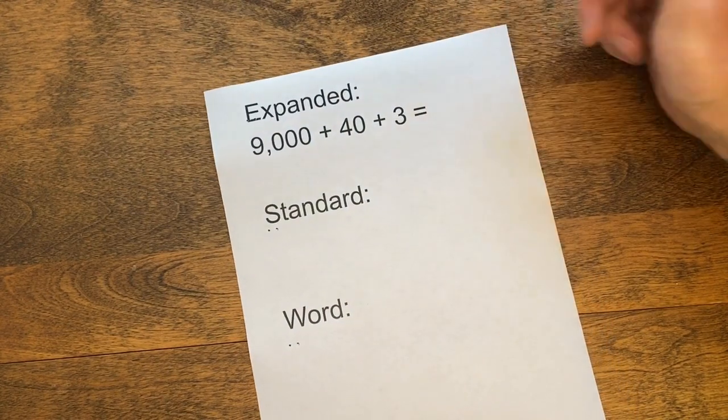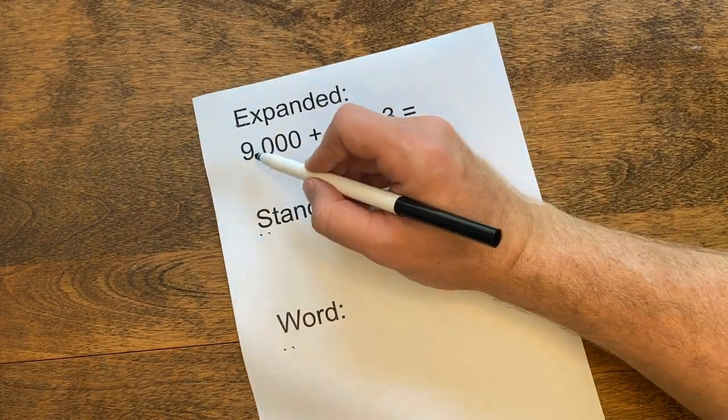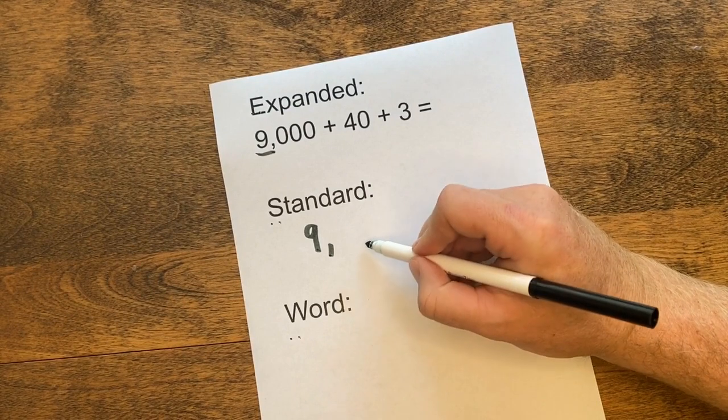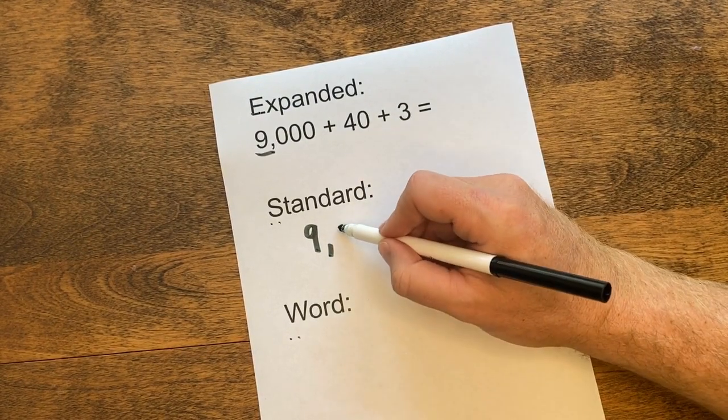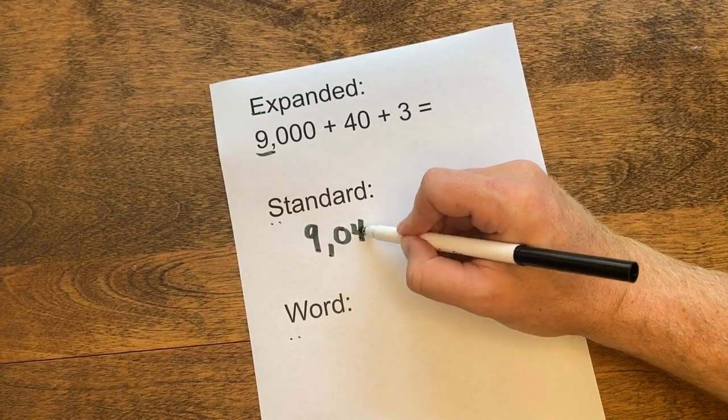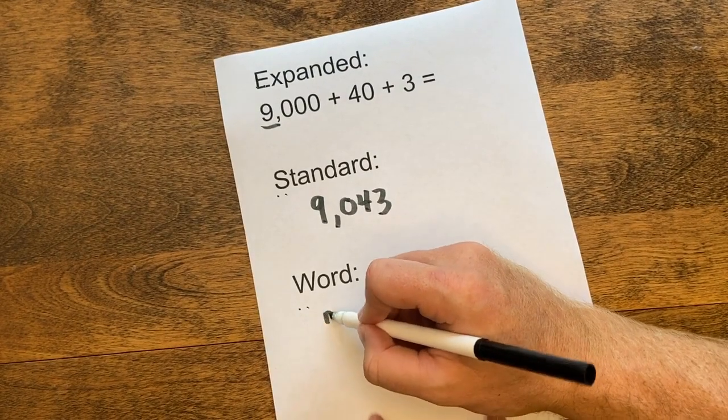If we're given the expanded form number first, we just put it back together to get our standard number. So we put a 9 in the thousand spot. We have nothing in the hundred spot, so we put a zero as a placeholder. We have a 4 in the 10 spot for 40, and a 3 in the 1 spot. So we have 9,043.